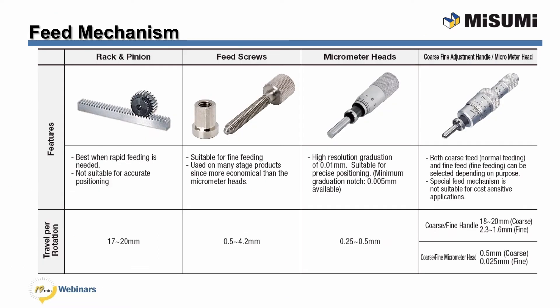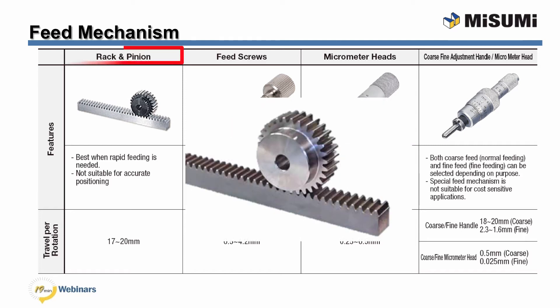Our stages have four different types of feed mechanism. The rack and pinion feed mechanism is suitable for applications that require rapid feeding. Due to the construction of the rack and pinion, this mechanism is not suitable for accurate positioning. Travel per revolution on the rack and pinion style is between 17 to 20 millimeters.